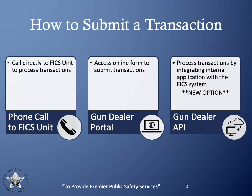We will now discuss how to submit a transaction. Currently, there are two ways to submit a transaction with the FIX unit: the first is to make a phone call to the FIX unit directly to process your transactions, and the second is to access the online form in the gun dealer portal to submit a transaction. An additional future method is to use the external gun dealer API, which will integrate your internal application with the FIX system.